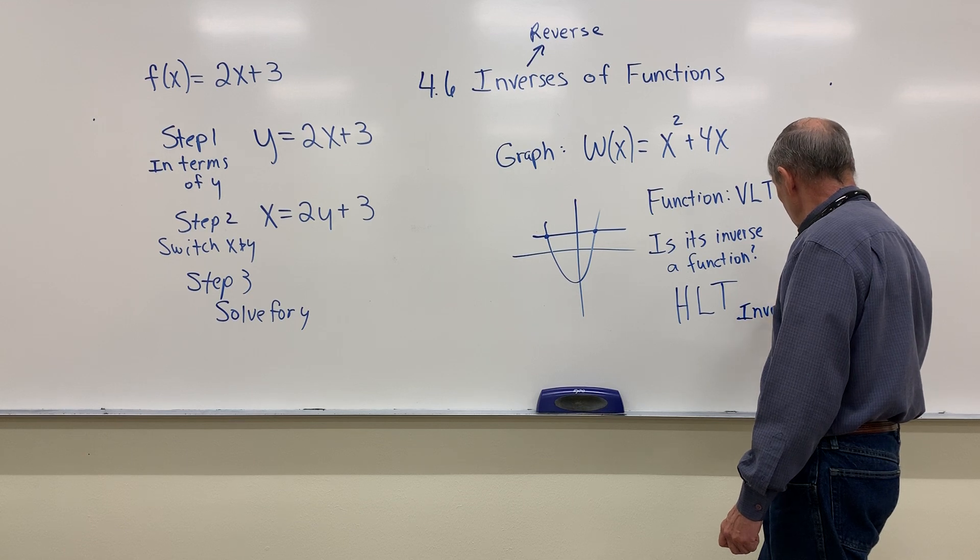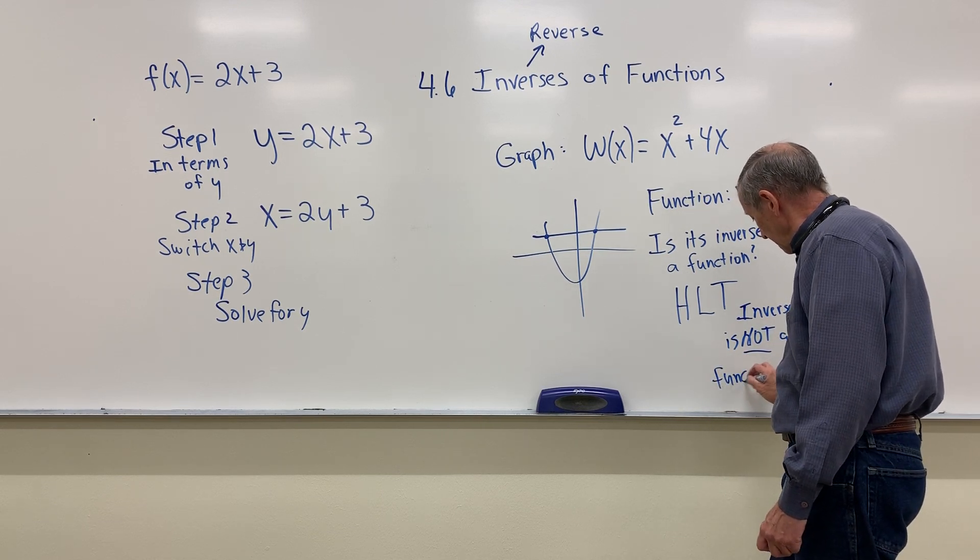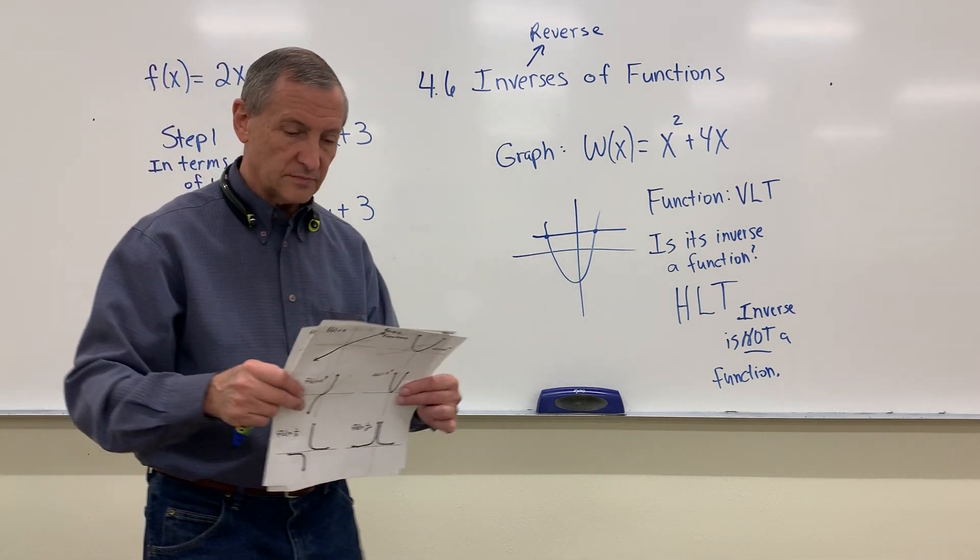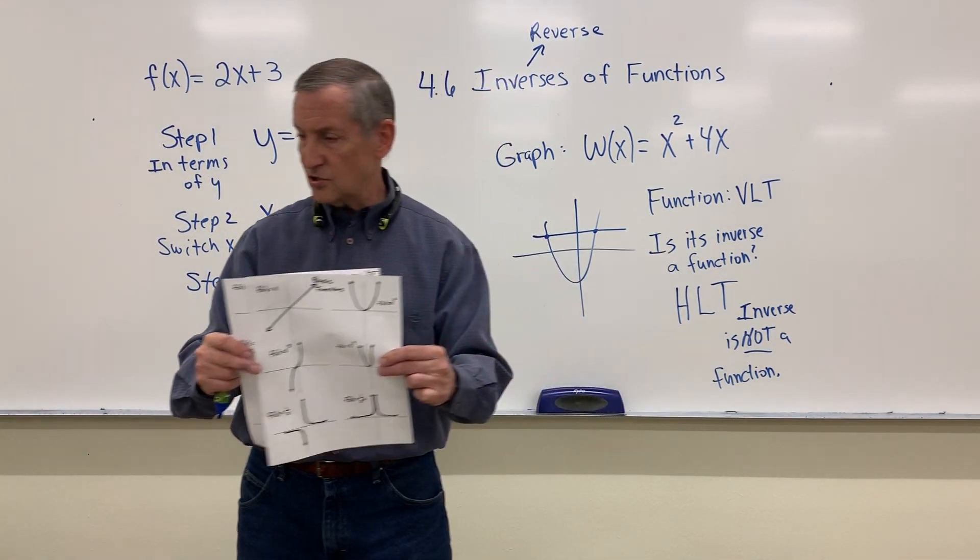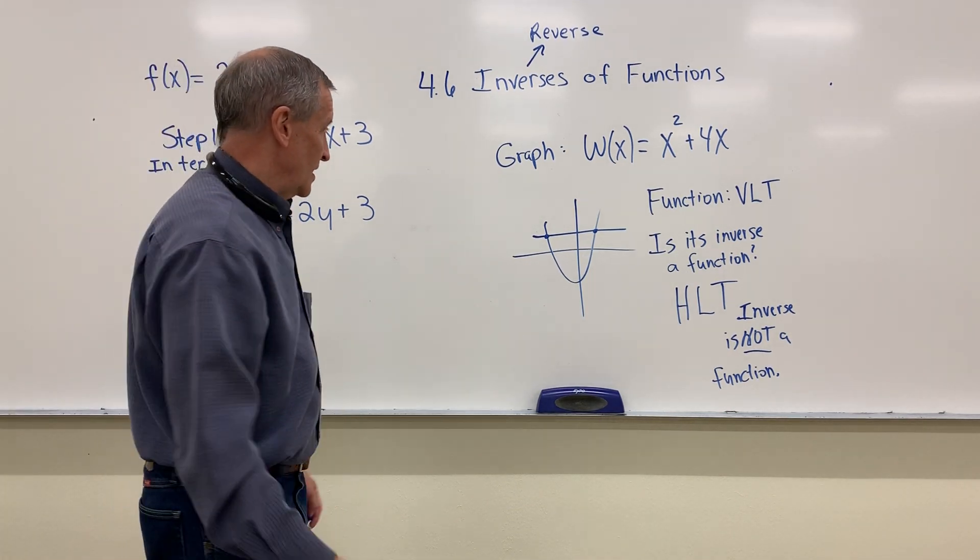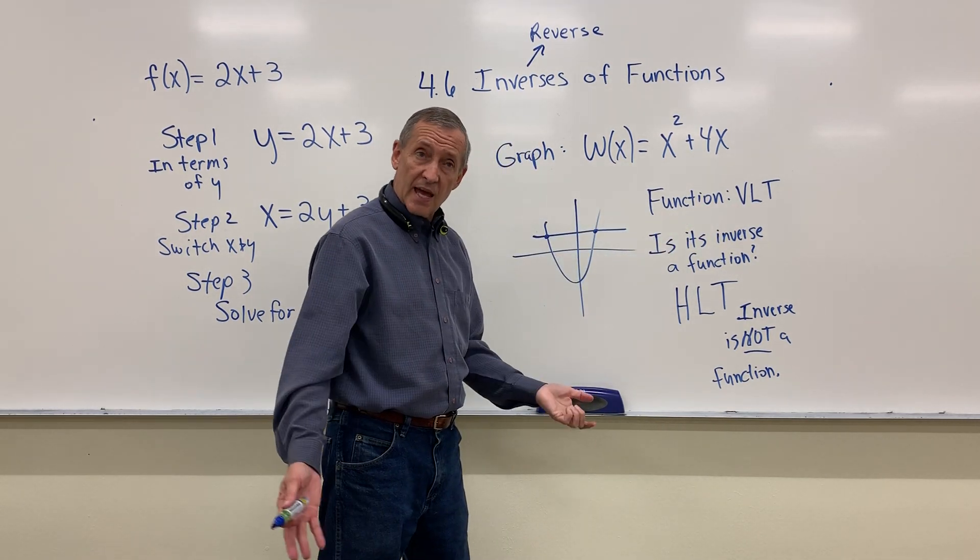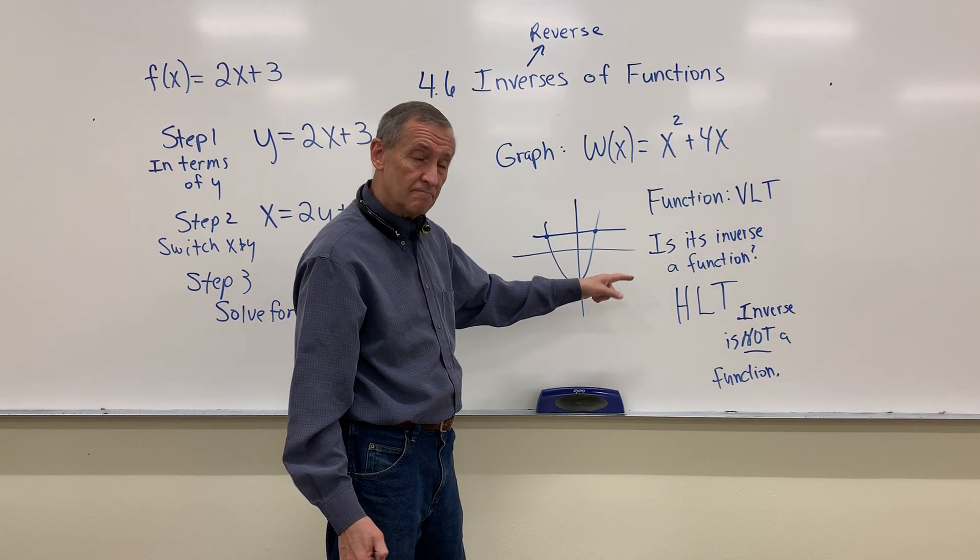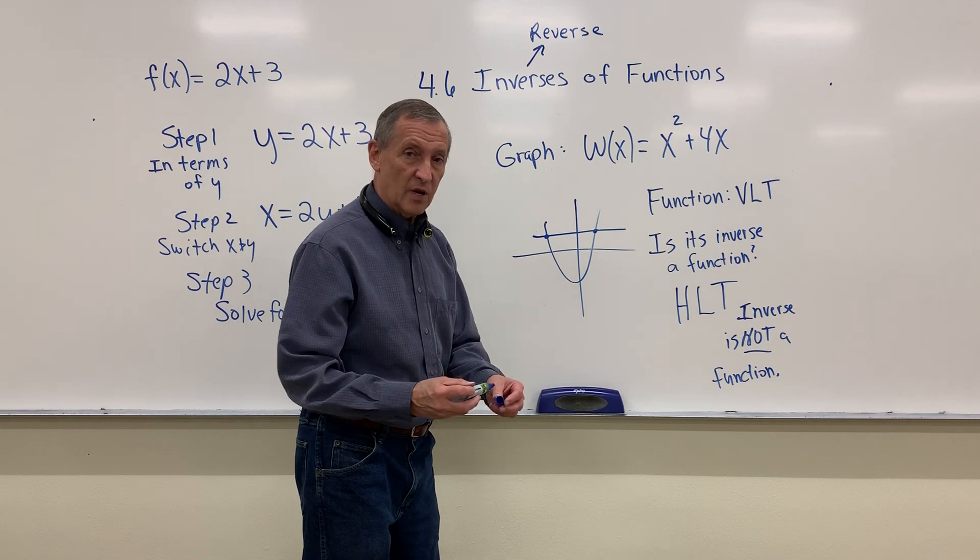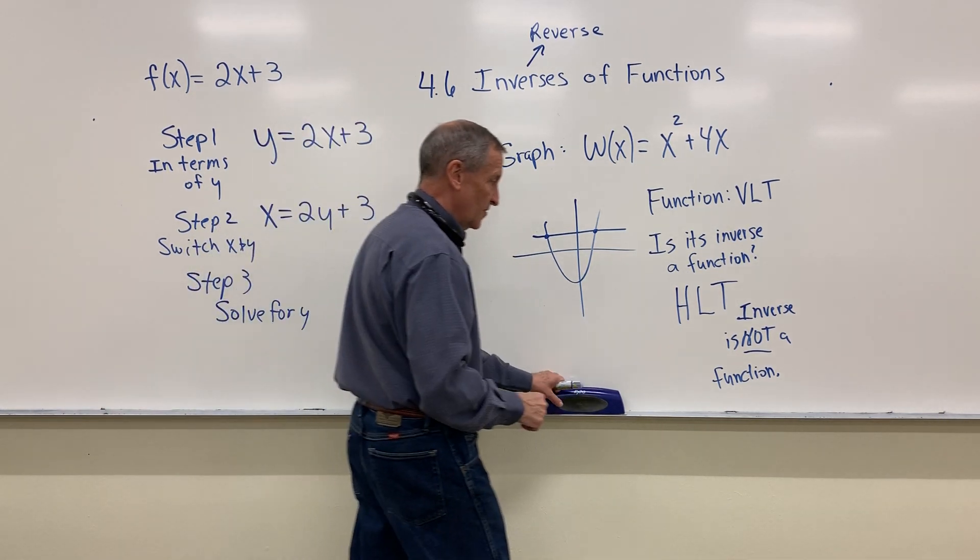Instead of the vertical line test, you probably guessed it already, I'm going to use the horizontal line test. I'm going to see if a horizontal line will cut this graph in more places than one. Obviously it does. A horizontal line can easily cut it in more places than one. This guy fails the horizontal line test. That tells me its inverse is not a function. It'll have an inverse, but it is not a function. I would choose on this number four on Hawks, inverse is not a function.